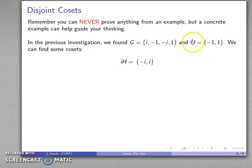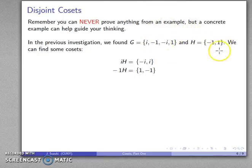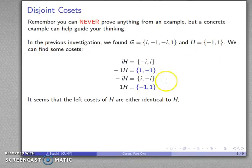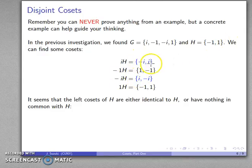IH is formed by multiplying every element of H by i, giving us {-i, i}. (-1)H gives us {1, -1}. (-i)H gives its result, and 1·H gives its result. Looking at this, when we form the cosets of H, we get one of two different things: they are either identical to H — remembering that order doesn't matter — or they are completely different and have nothing in common with H. In other words, the cosets are disjoint.